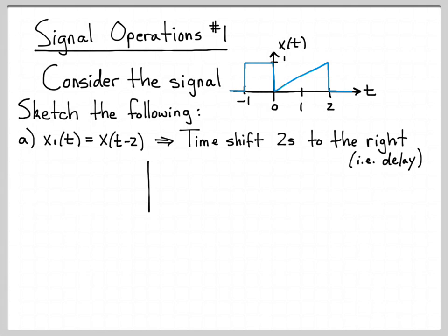So to sketch x(t-2), we need to just take our original picture and shift it two units to the right. So the way I like to do that is to pick points. So minus 1 is going to have 2 added to it, so it's going to turn into 1. 0 will turn into 2, 1 turns into 3, 2 turns into 4. So it's the exact same picture, just delayed by two seconds. So that is x(t-2). All right, that was pretty easy.